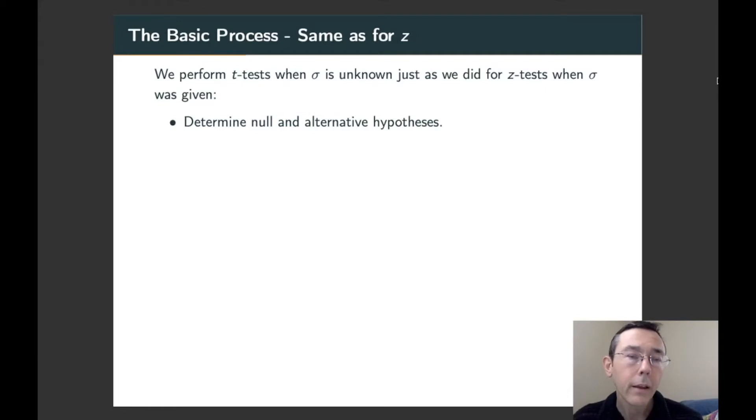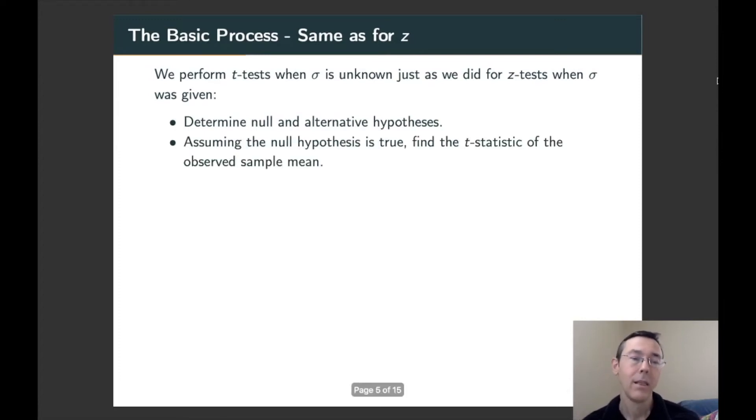To do a hypothesis test when sigma is unknown, we're going to start with null and alternative hypotheses. Then we're going to assume that the null hypothesis is true and we're going to compute the t statistic for the sample data that we actually have. So we're going to do x bar minus mu naught divided by s over the square root of n. And after that we compute p-values.